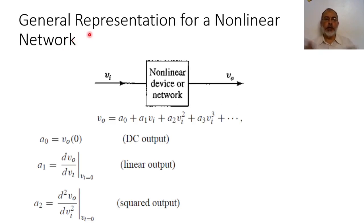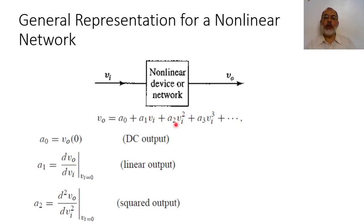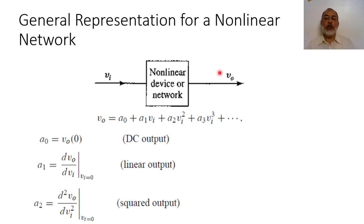The general representation for any nonlinear network, assuming input voltage and output voltage, is that the output voltage equals A0 plus A1 times the input signal, plus A2 times the square of the input signal, plus A3 times the cube of the input signal, and so on. This is the Taylor series representation. It can be generalized to input and output currents, electric fields, or magnetic fields, but in general, the output signal is related to the input signal as a Taylor series expansion.